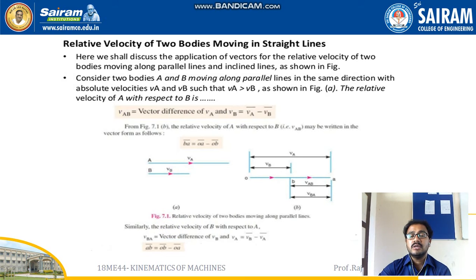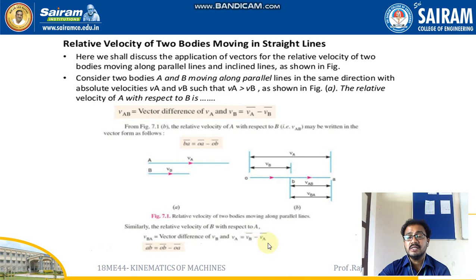Similarly, the relative velocity of B with respect to A can be written as VBA, equal to the vector difference of VB and VA, that is VB̅ minus VA̅. In notation form: AB̅ = OB̅ − OA̅.